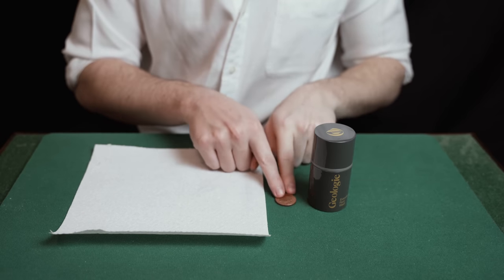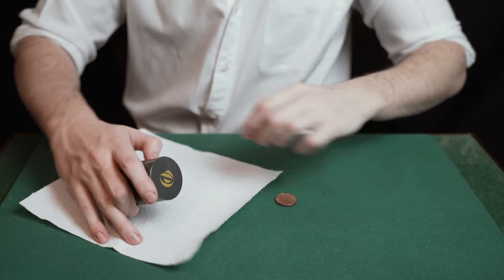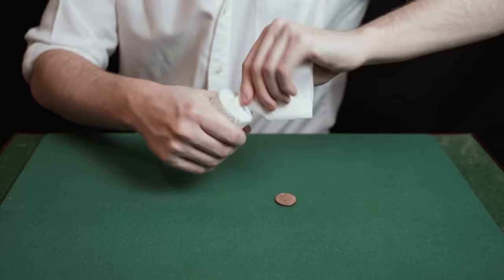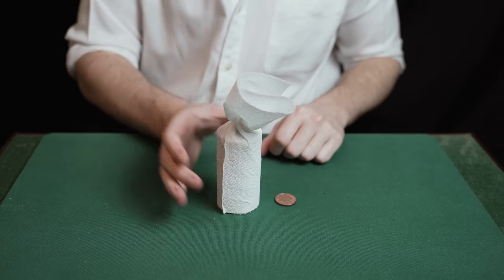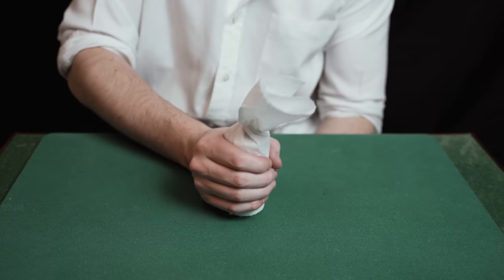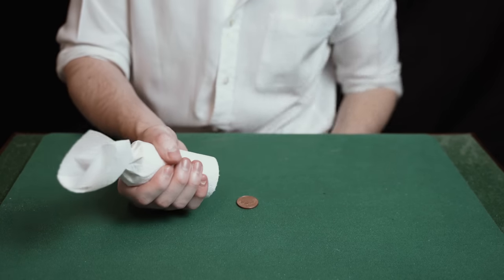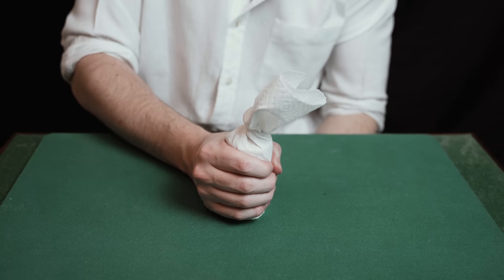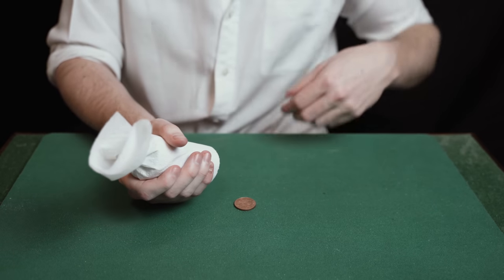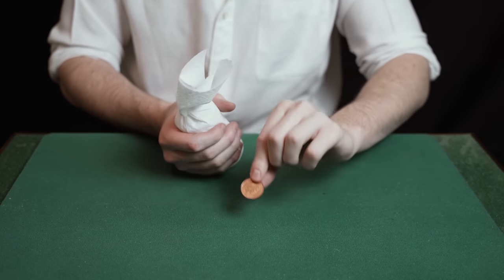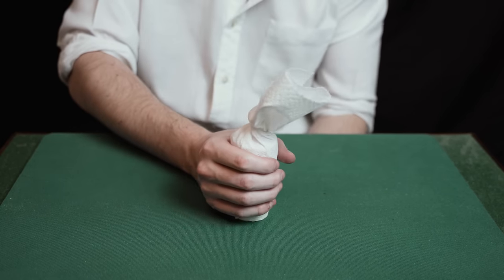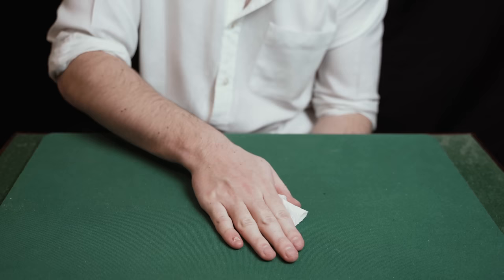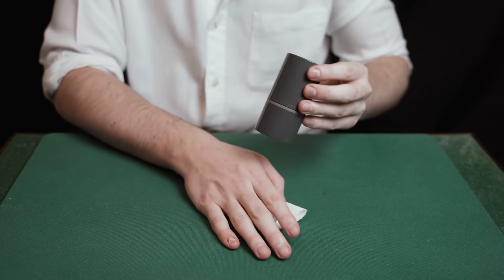The magician has a coin, a napkin and a bottle from this week's sponsor Geology. He wraps up the bottle and explains that the coin is going to go straight through the table. He tries to push the coin through the table but it doesn't work. So he inspects the coin and tries again. Again this doesn't work so the magician tries to find the soft spot on the table and then puts the coin down and tries again. This time the bottle goes straight through the table, not the coin.